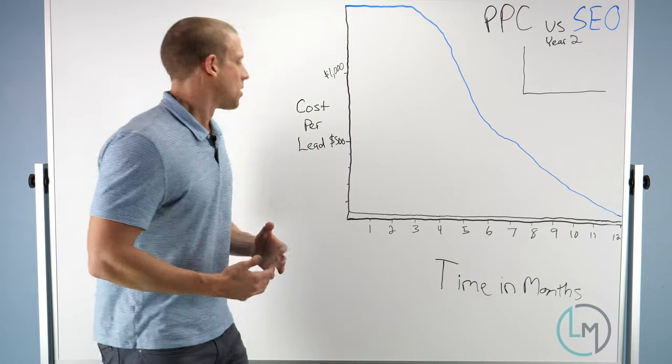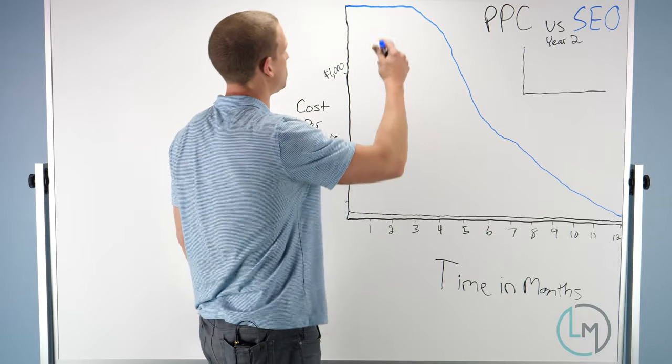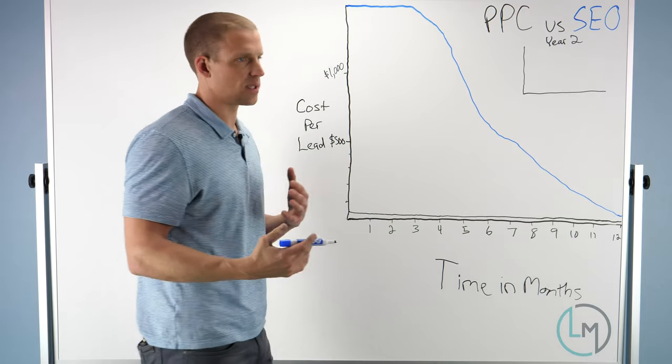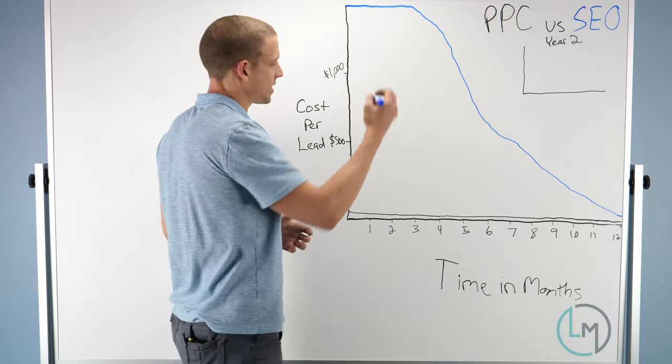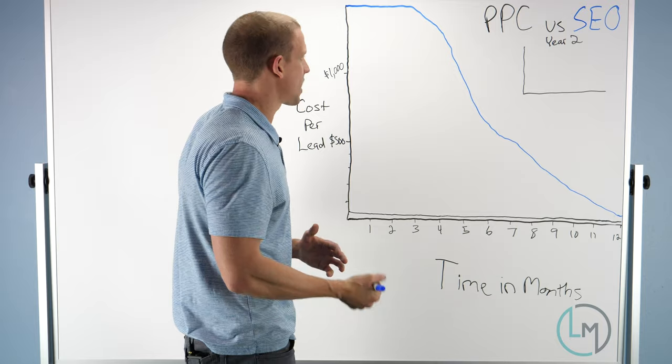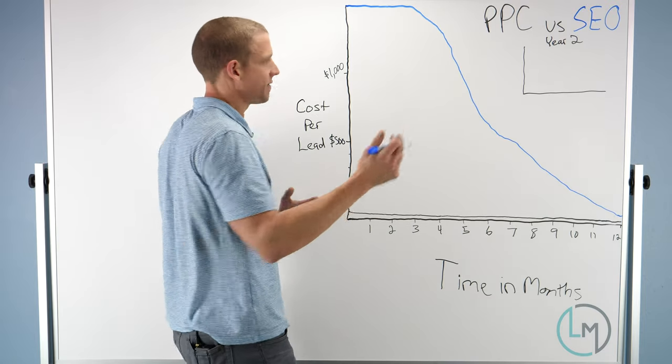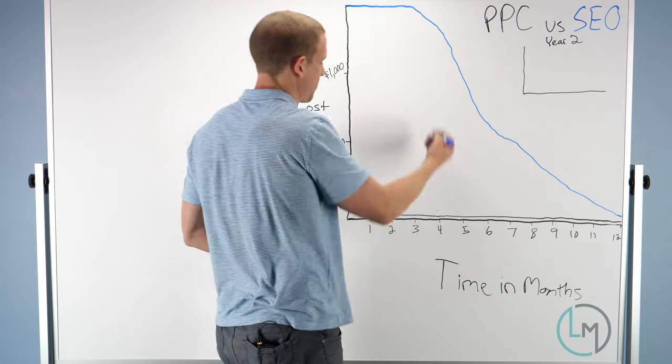SEO is much different in that. So you start paying an SEO agency to build links to your site, to do the on-site optimization. Let's just say you're in a market like San Diego, you're paying this SEO agency $1,500 a month.